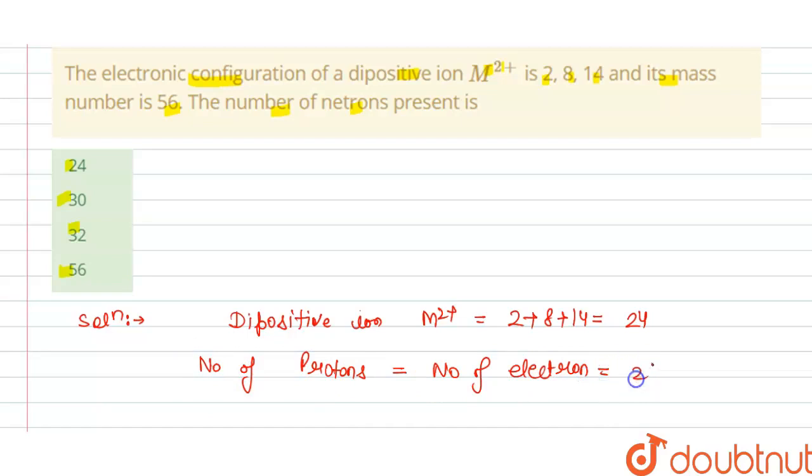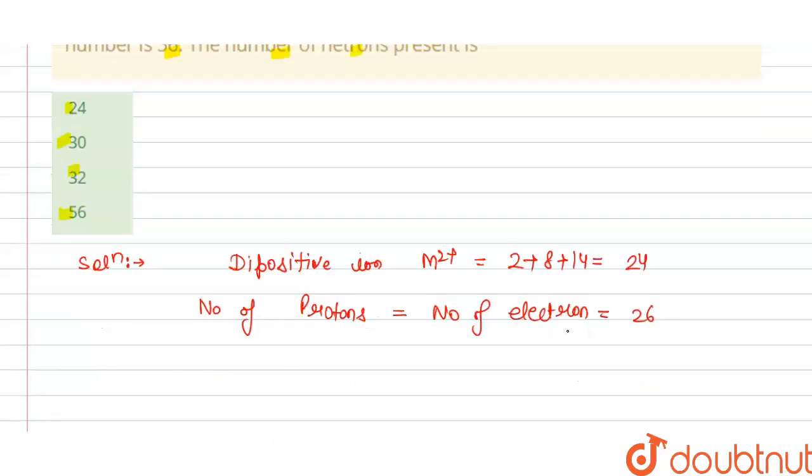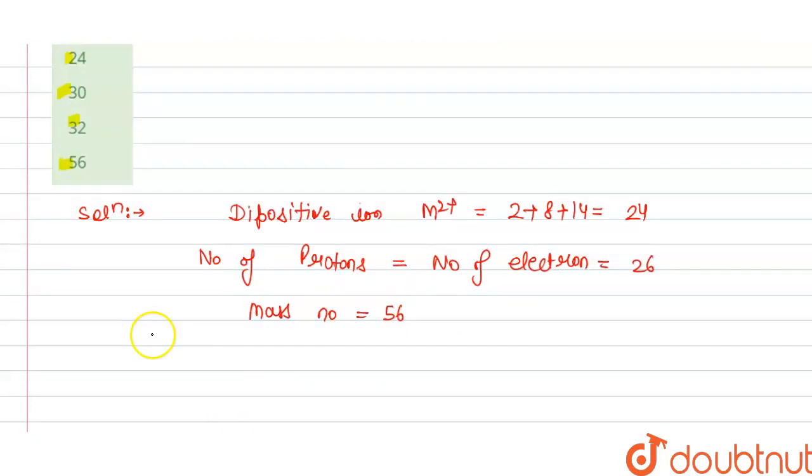And we have given here mass number is 56. And we know that mass number is number of protons